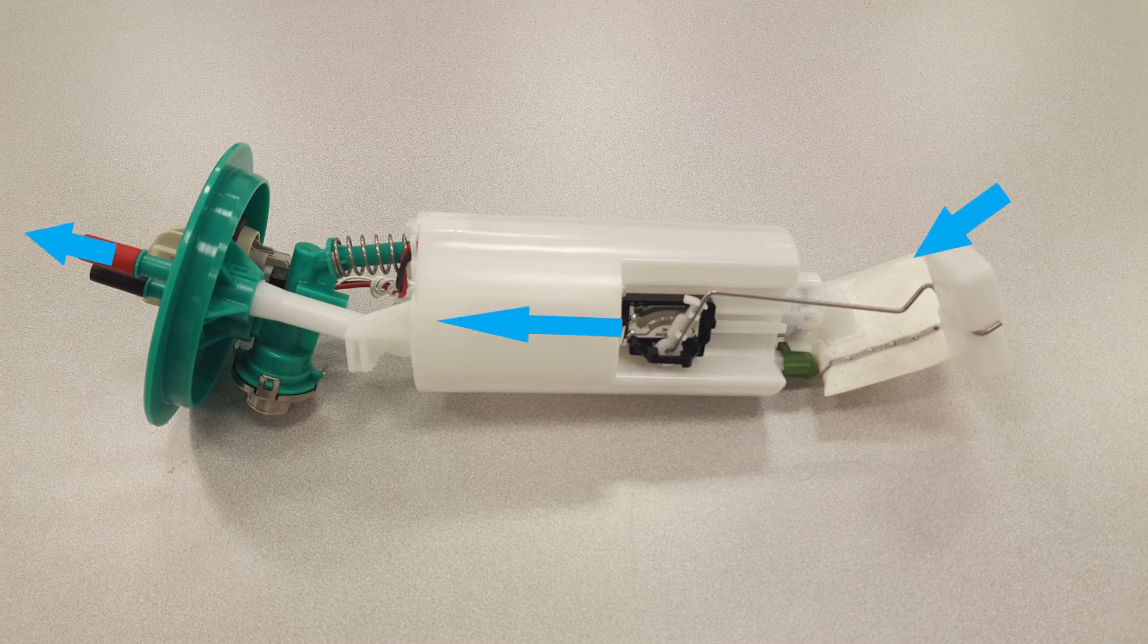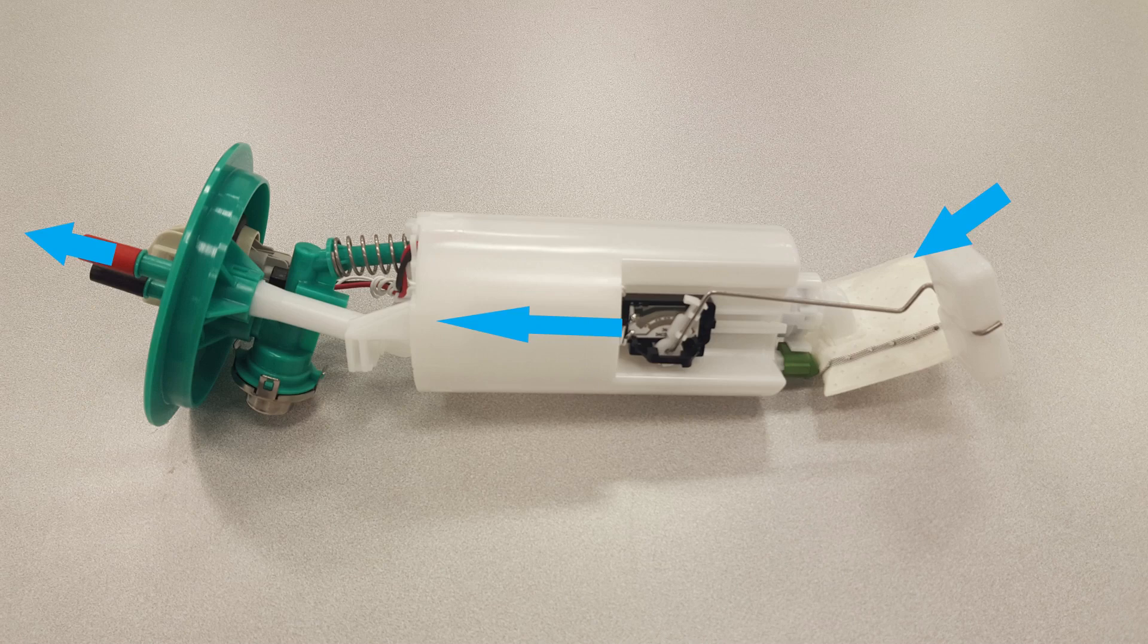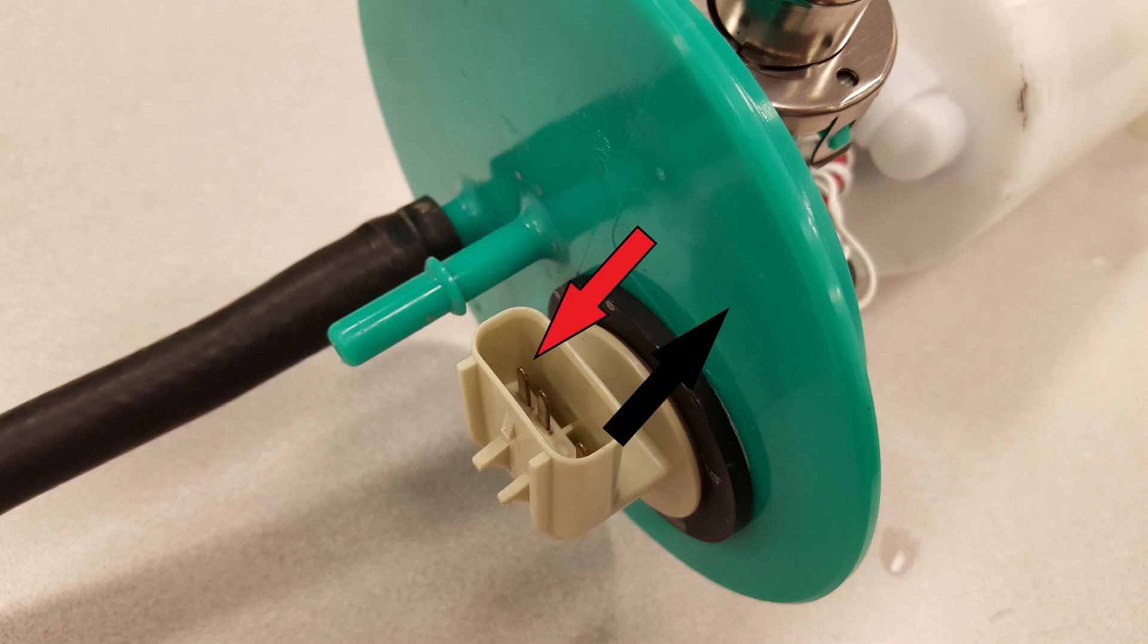The pump draws fuel through a strainer and pushes it through the motor to the outlet. The pump contains one check valve. The check valve in the pump outlet maintains pump pressure during engine off conditions. The fuel pump relay provides voltage to the fuel pump.